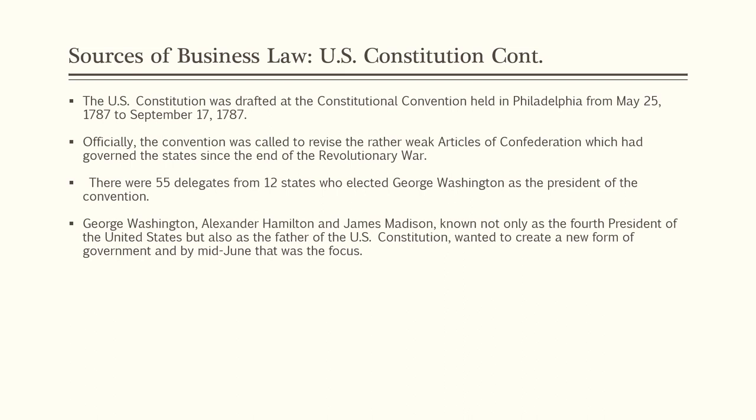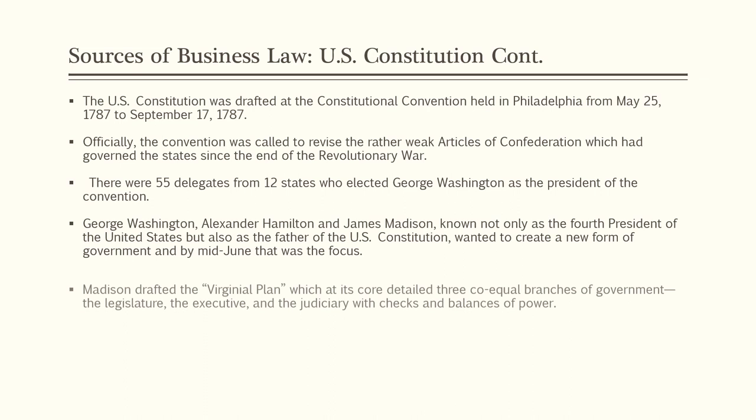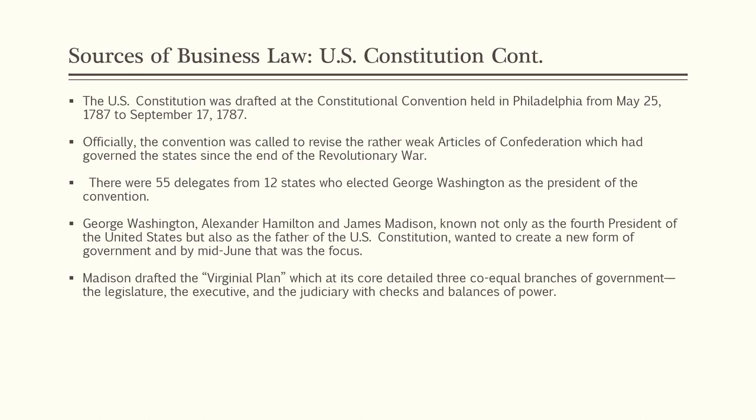George Washington, Alexander Hamilton, and James Madison — known as the fourth President of the United States and the father of the U.S. Constitution — all wanted to create a new form of government. By mid-June, that was the focus. Madison drafted the Virginia Plan, which detailed three co-equal branches of government: the legislature, the executive, and the judiciary, with checks and balances of power. It is the Virginia Plan that forms the basis of our current Constitution.